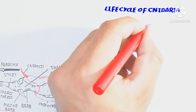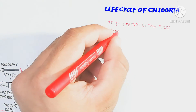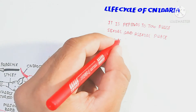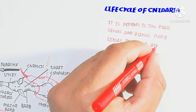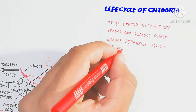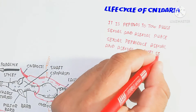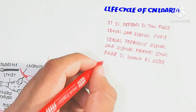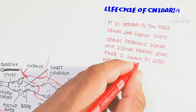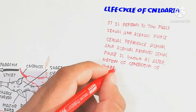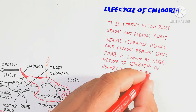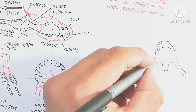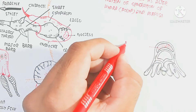The gastrovascular cavity is important in Cnidaria. We will now discuss the life cycle of a cnidarian, specifically the alternation of generations. Alternation of generation depends on two phases: sexual and asexual. The sexual phase and asexual phase interconnect and alternate with each other — this is known as the alternation of generation, involving the polyp and medusa stages.